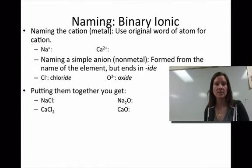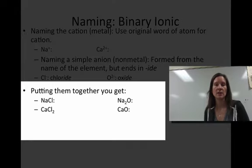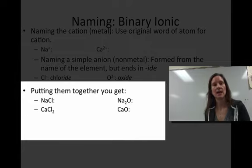Naming these binary ionic compounds are fairly simple. You name the first part with its name from the periodic table. You name the second part with an 'ide' at the end. So if you look at these options down at the bottom, Na with Cl would be sodium chloride. Ca with Cl would be calcium chloride. Na with O would be sodium oxide. Ca with O would be calcium oxide. Naming binary ionic compounds tends to be the easiest topic for people.